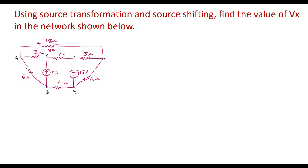Here we can see that in between node B and C, current source 5 amp is connected. I will try to apply source shifting here so that I will shift the current source. Instead of connecting B to C, I will connect it from B to A and A to C. That is nothing but current shifting. So first step, I will apply current shifting.